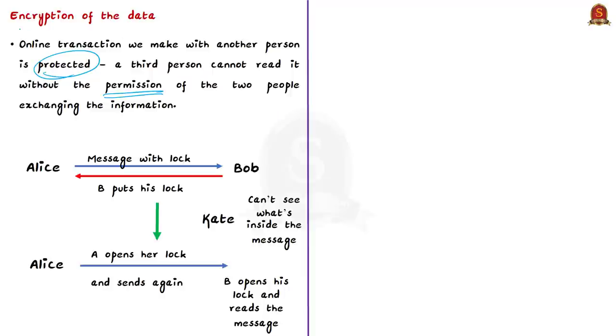Every online transaction which we make with another person is protected so that a third person cannot read it without the permission of the two people exchanging the information. This process is called encryption of data. For example, the first person Alice sends an encrypted message to the second person Bob. How can Alice ensure that only Bob has the key to the code which she has sent and a trespasser Kate cannot intercept or open it? In layman terms, this is what encryption means.